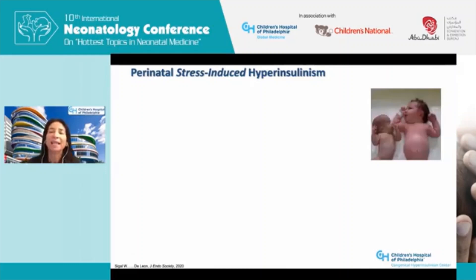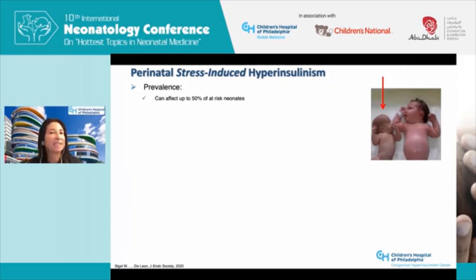Now, perinatal stress-induced hyperinsulinism. If asked which of two babies has hyperinsulinism — a large or small baby — most people point to the larger baby, since large birth weight is associated with hyperinsulinism. However, in this case the small baby has hyperinsulinism. The prevalence has been estimated as high as 50% in at-risk neonates. In a series of over 100 babies at our institution, babies with perinatal stress hyperinsulinism were more frequently male — 75% of our cohort.